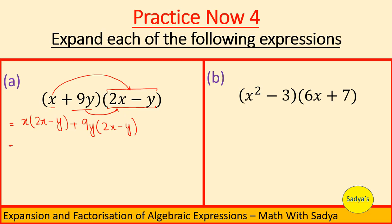Now, simplify this expression. Apply the distributive law. x into 2x is 2x squared. x into negative y is negative xy. Now, 9y into 2x is 18xy.